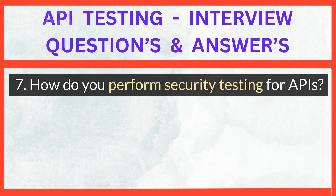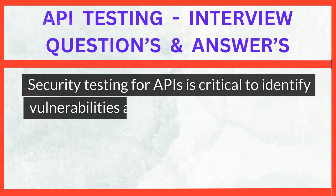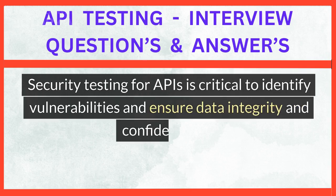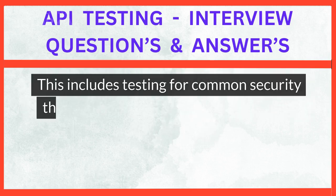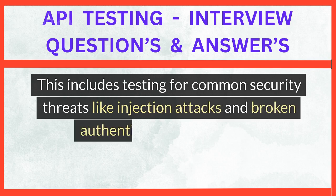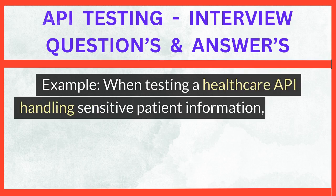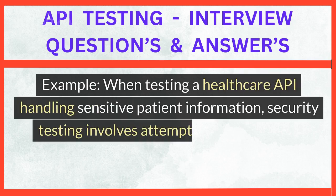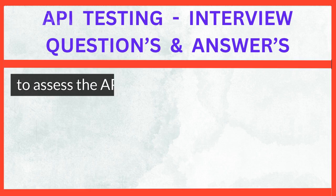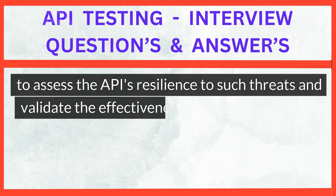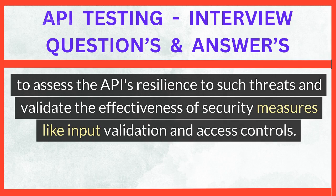How do you perform security testing for APIs? Security testing for APIs is critical to identify vulnerabilities and ensure data integrity and confidentiality. This includes testing for common security threats like injection attacks and broken authentication mechanisms. For example, when testing a healthcare API handling sensitive patient information, security testing involves attempting SQL injection attacks or unauthorized access to assess the API's resilience and validate the effectiveness of security measures like input validation and access controls.